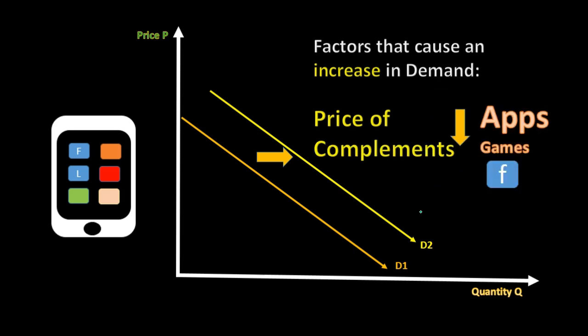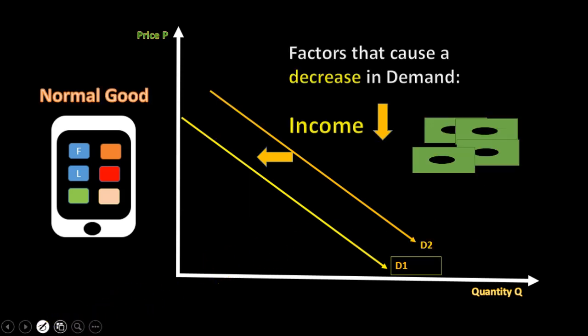Then we have the price of complements — things that go together. For example, if we're talking about tablets, complements would be apps, applications, and games. If the price of apps goes down, that could shift the demand curve for tablets to the right because people would get a better deal on the complement goods. Another example is hamburgers and hamburger buns — obviously complements; the price of one will affect the quantity sold of the other.